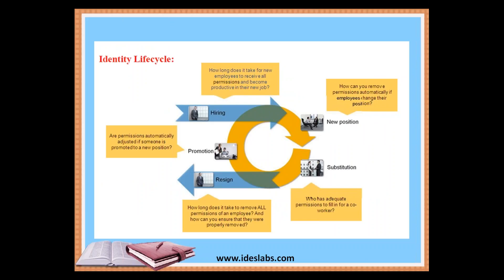Next is an identity lifecycle. As shown in the figure, it has hiring and time components. Coming to hiring, first it checks how long it takes for a new employee to receive all the permissions and become productive in their new job. After that, the employee is given a new position, where the system checks how permissions can be removed automatically if an employee changes their position. Next comes substitution, which focuses on ensuring adequate permissions to fill in for co-workers.